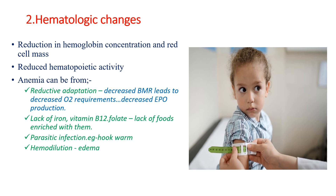Parasitic infection — hookworm — is common during malnutrition. In addition, there is dilutional anemia because most malnourished children are edematous, causing increased intravascular fluid level. This causes dilutional anemia, but this is a false anemia that will be corrected later when the edema disappears. So anemia can be due to reductive adaptation, lack of iron, B12, and folate, parasitic infection, and also hemodilution.